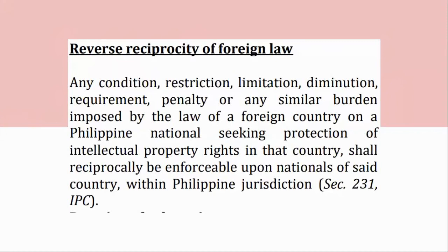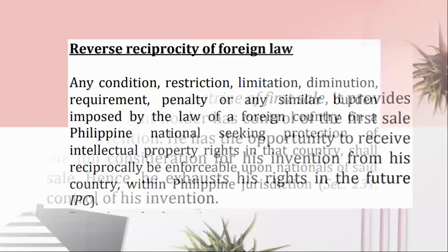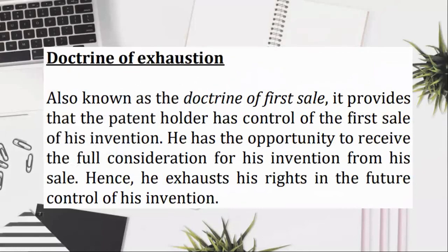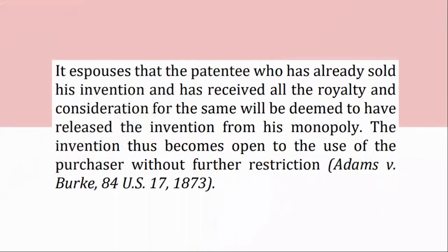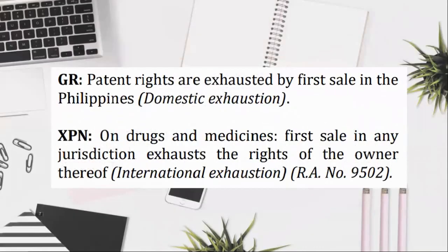Doctrine of exhaustion, also known as the doctrine of first sale: it provides that the patent holder has control of the first sale of his invention. He has the opportunity to receive the full consideration for his invention from his sale. Hence, he exhausts his rights in the future control of his invention. The patentee who has already sold his invention and has received all the royalty and consideration for the same will be deemed to have released the invention from his monopoly. The invention thus becomes open to the use of a purchaser without further restriction. Adams v. Burke, 84 U.S. 17, 1873. Generally, patent rights are exhausted by first sale in the Philippines (domestic exhaustion). For drugs and medicines, first sale in any jurisdiction exhausts the rights of the owner (international exhaustion). RA No. 9502.